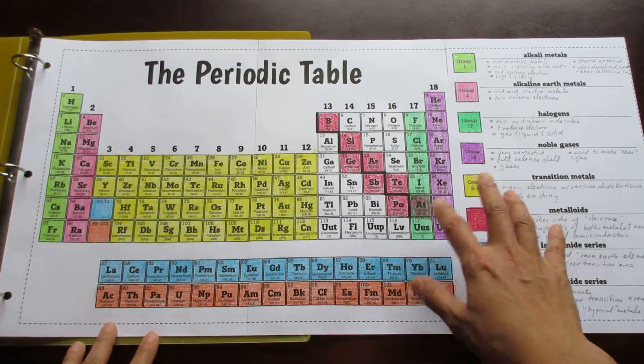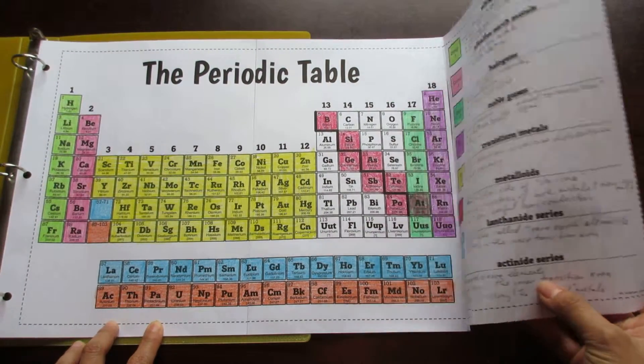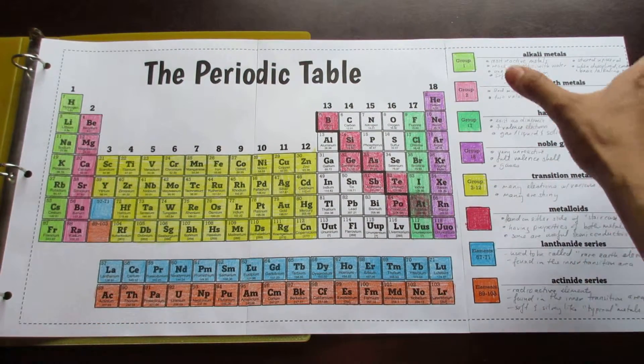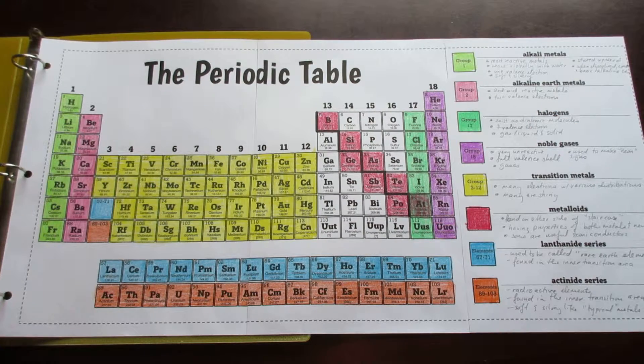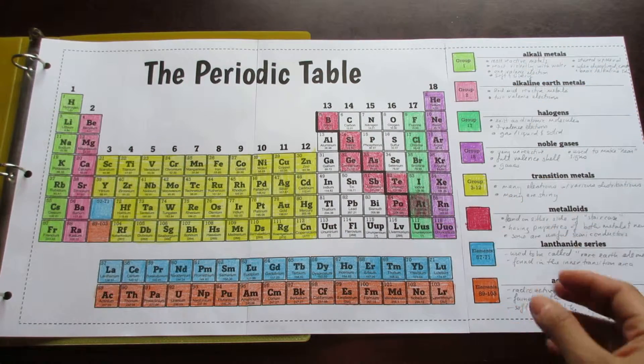If you want your students to have a third panel, this third panel shows the second feature of this foldable which is an area for them to summarize their notes and descriptions of the important groups found on the periodic table.